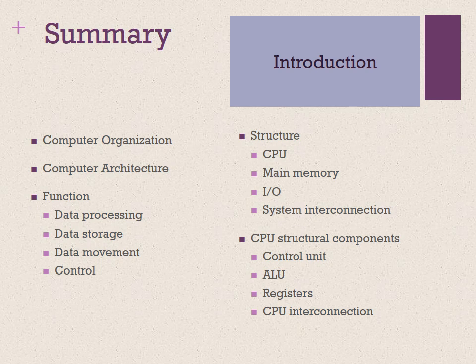In summary, in this section we have covered the basic difference between computer organization and architecture, and understood the different functions — data processing, data storage, data movement, and control — in a computer system. We also covered the structure of a typical computer: CPU, main memory, I/O, and system interconnection components. We also took a very high-level view of the CPU's structural components like control unit and ALU.